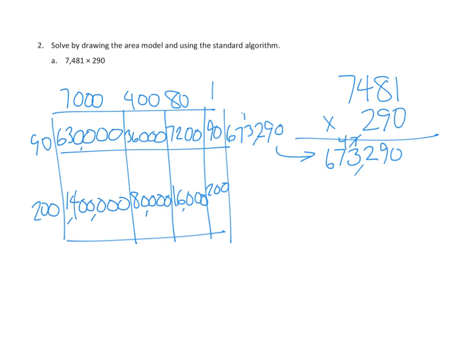Adding up the 200s row products: no ones, no tens, just 200 in the hundreds. The thousands: just 6,000. The ten-thousands: 1 plus 8 is 9 ten-thousands. The hundred-thousands: 400,000. And the millions: just the 1 out here. So our partial product is 1,496,200.